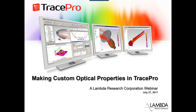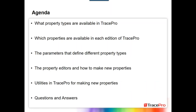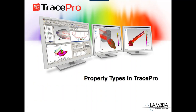Let's get to the topic of today's webinar: making custom optical properties in TracePro. Our agenda is: first, we'll talk about what property types are available; then a quick look at which properties are available in each edition; then the parameters used to define each property type; the property editors, including a walkthrough of making a new property; and finally the utilities in TracePro that are useful for making new properties, followed by Q&A. Please feel free to submit questions at any time.